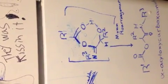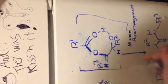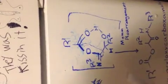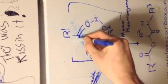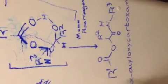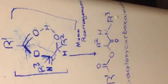This cyclic adduct is going to undergo a Mumm rearrangement. This happens by the electrons from this imine attacking this carbon, and we're going to end up with an alpha-acyloxy carboxamide.